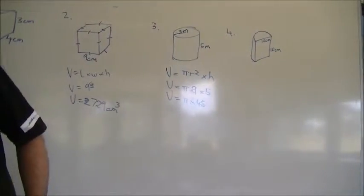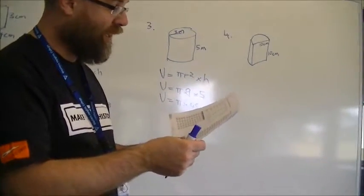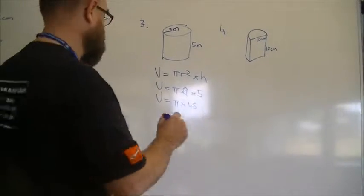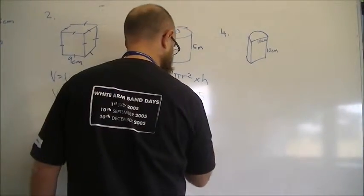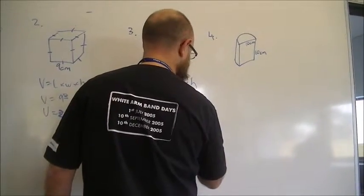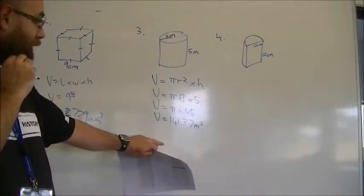And what I'm going to do is grab my cheat sheet here, because I use them too. I'll look up pi of 45, and it's 141.37. So, that's metres cubed. Jazz, am I right?